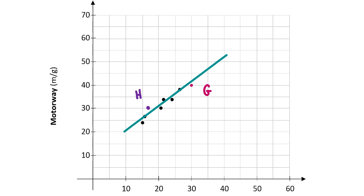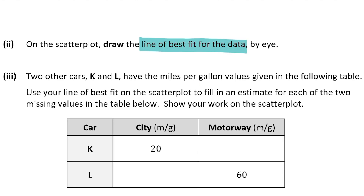For drawing the line of best fit and for plotting the points G and H in part one, you're going to get a total of 10 marks for this question.